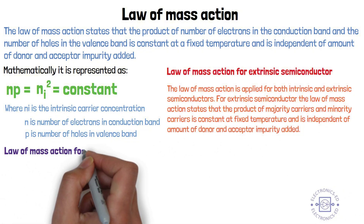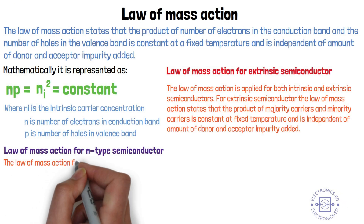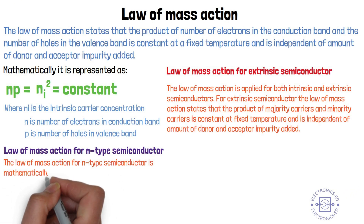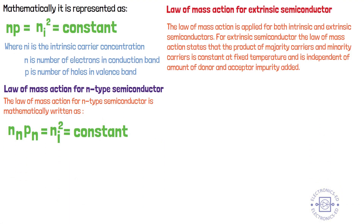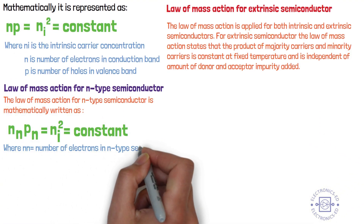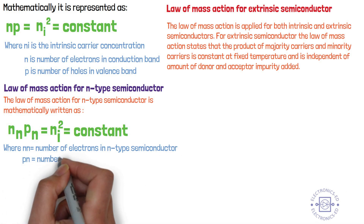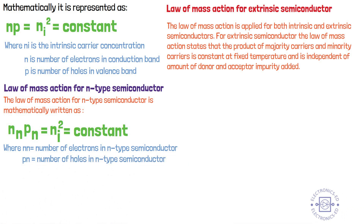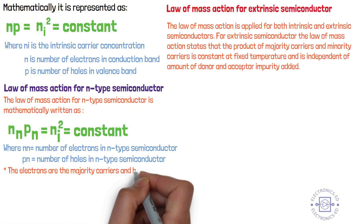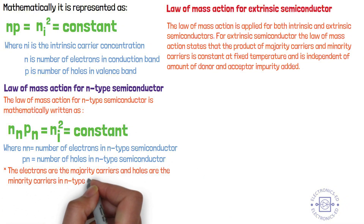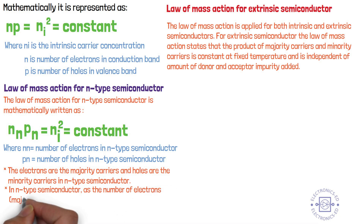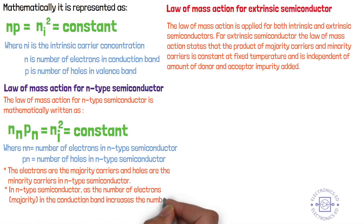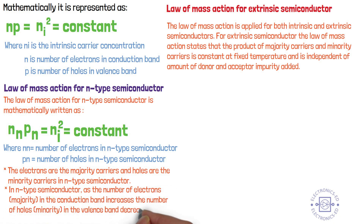Law of mass action for N-type semiconductor. The law of mass action for N-type semiconductor is mathematically written as N_N times P_N equals NI square equals constant, where N_N equals number of electrons in N-type semiconductor and P_N equals number of holes in N-type semiconductor. The electrons are the majority carriers and holes are the minority carriers in N-type semiconductor. As the number of electrons in the conduction band increases, the number of holes in the valence band decreases.